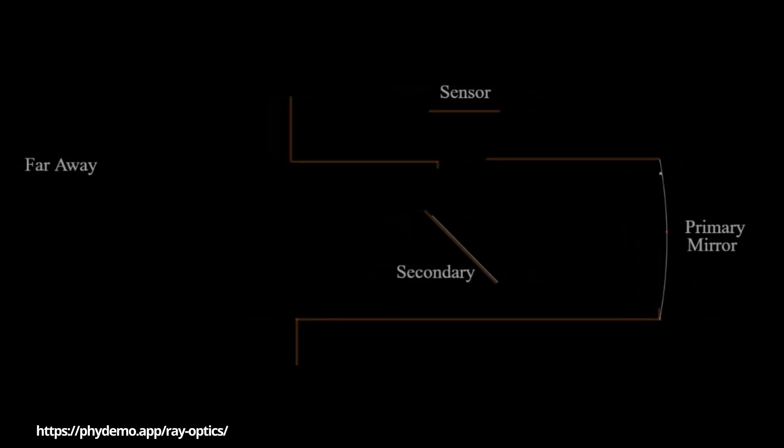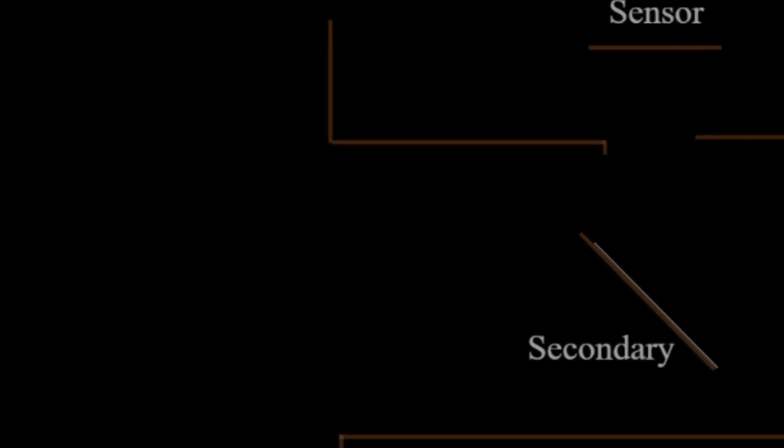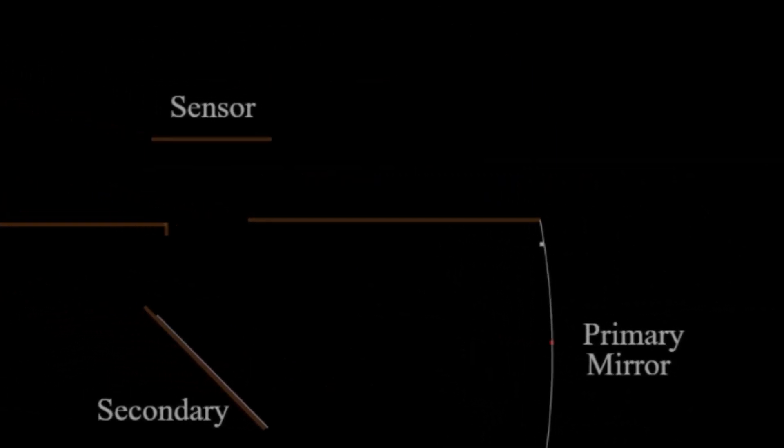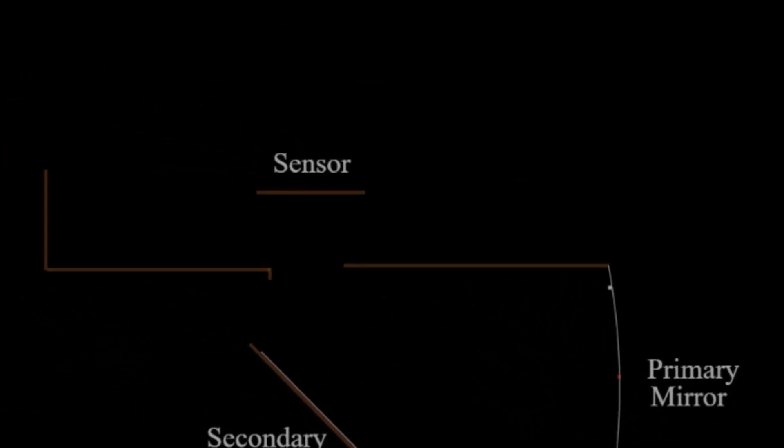Okay, so here is a diagram of a telescope. Light enters the front, bounces off the primary mirror, then off the secondary mirror, and then goes into the sensor.